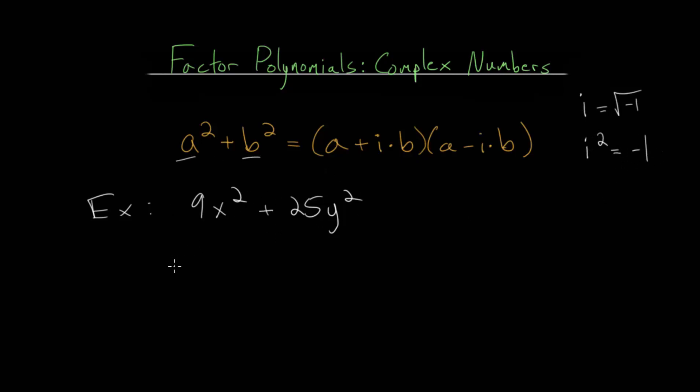And we can rewrite this sum as 9x squared minus negative 25 times y squared. And the reason that we rewrite a sum as subtracting a negative is to realize that this negative on the inside, this is really minus 1 multiplied by 25.